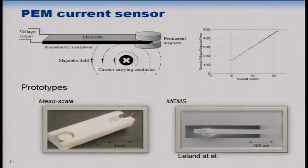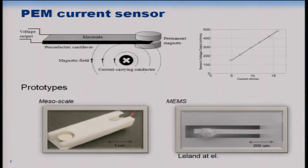You might wonder what kind of sensor can measure current outside of the breaker panels. We have been working on this for more than four and a half years. The idea is a piezoelectric cantilever with permanent magnets mounted on its tip. When placed in a magnetic field, the magnetic force deforms the cantilever, generating a voltage proportional to the current flowing in the conductors. Through modeling and testing, we confirmed the voltage output is linearly proportional to the current.